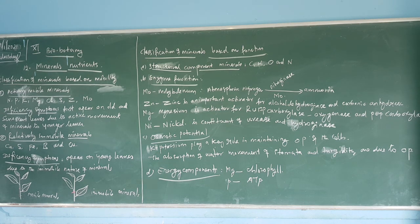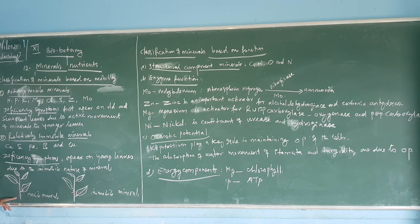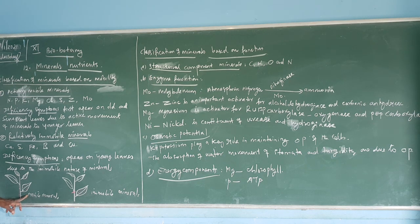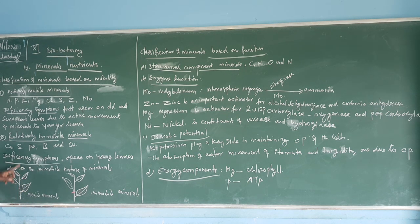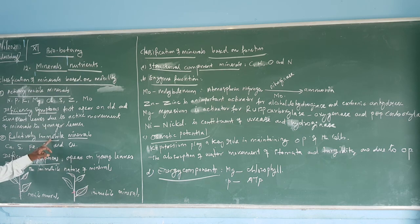These minerals — nitrogen, potassium, magnesium, chlorine, sulfur, zinc, and molybdenum — show movement from old leaves to young leaves. This type of movement is called active mobility of minerals.